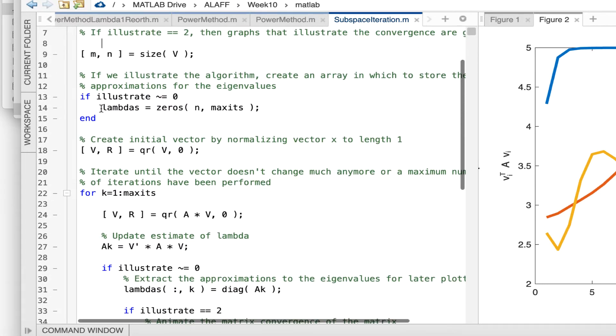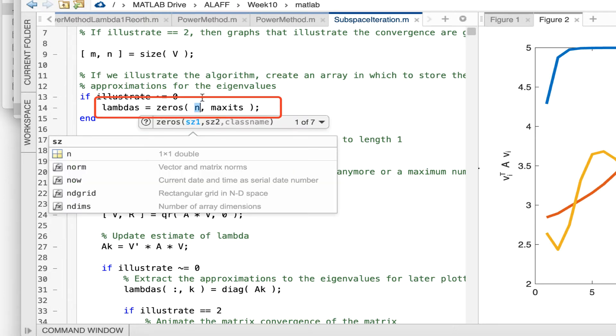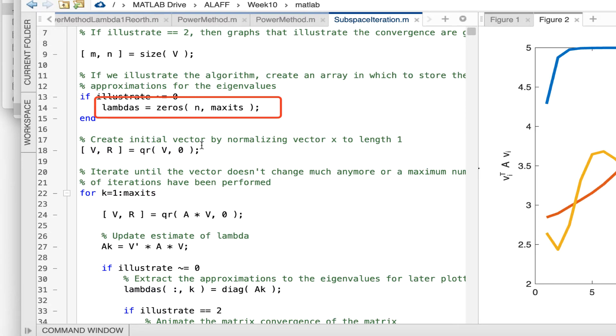Now the important things here are that I now track n eigenvalues. N is the number of columns in matrix V, so that I can plot them.